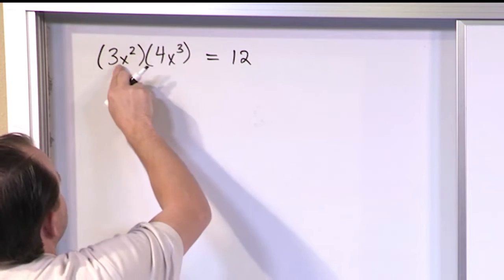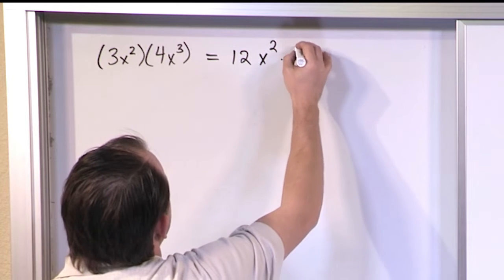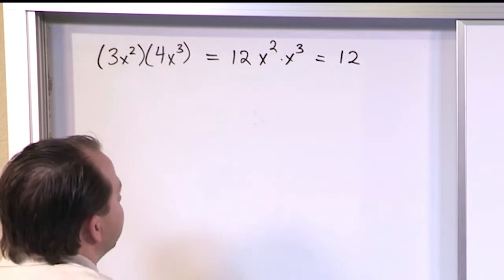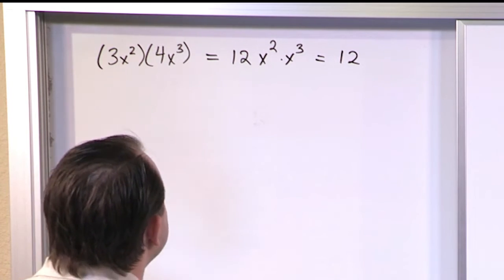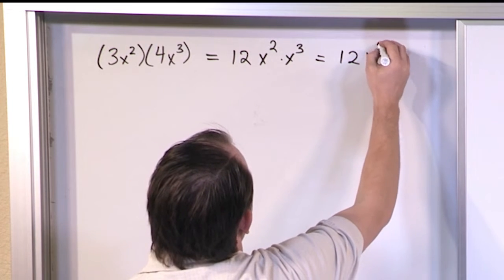And then you're still going to have these variables and exponents multiplied. So for now let's just leave it as x² times x³. Now we've already covered this. What do you do when you have exponents, variables that have exponents multiplied together? The bases are the same so I can add the exponents. So it'll be x to the fifth power.